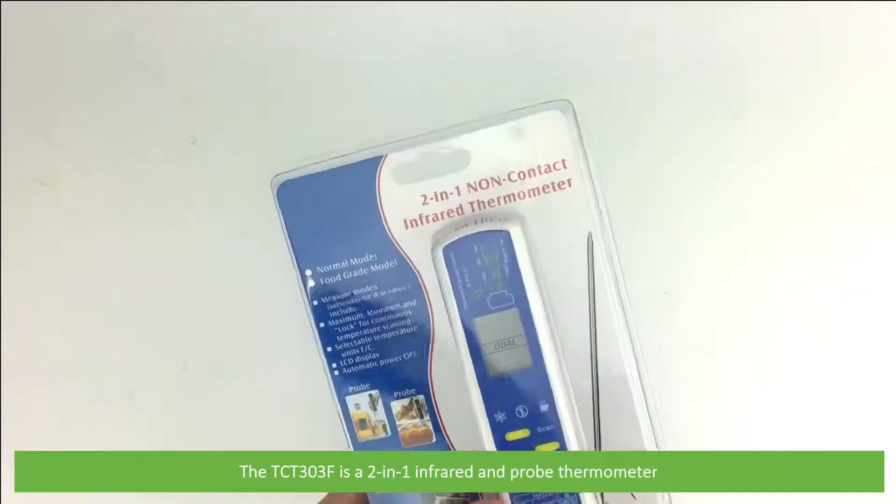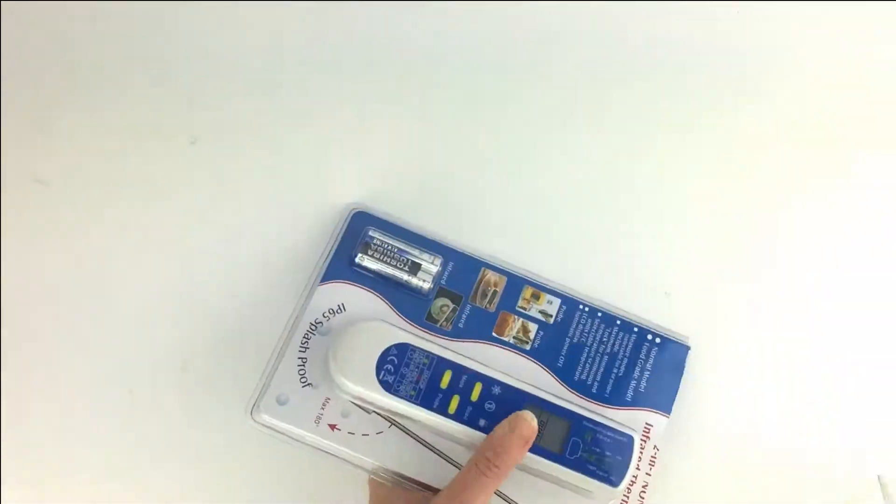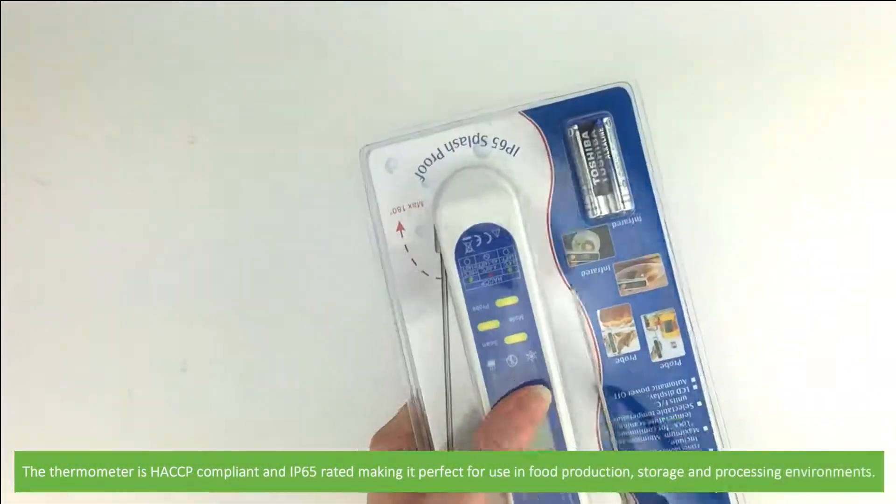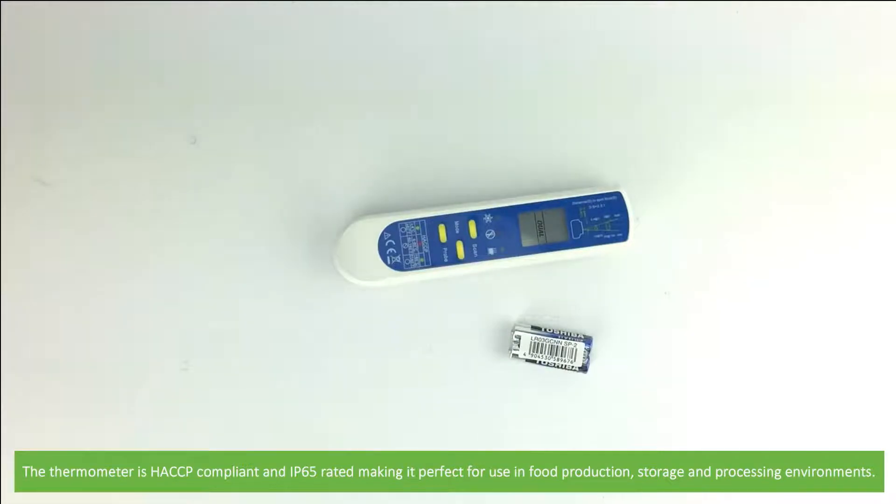The TCT303F is a two-in-one infrared and probe thermometer. The thermometer is HACCP compliant and IP65 rated, making it perfect for use in food production, storage, and processing environments.